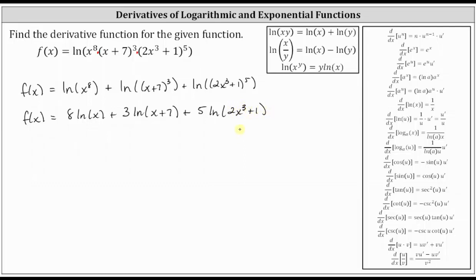Now that we've expanded the natural log on the right, we can more easily determine the derivative function. f prime of x is equal to the derivative of eight natural log x, which is equal to eight times the derivative of natural log x, which is one divided by x. Notice how because the inner function is just x, the chain rule is not needed. However, it's never wrong to apply the chain rule — if we let u equal x, u prime is just one.